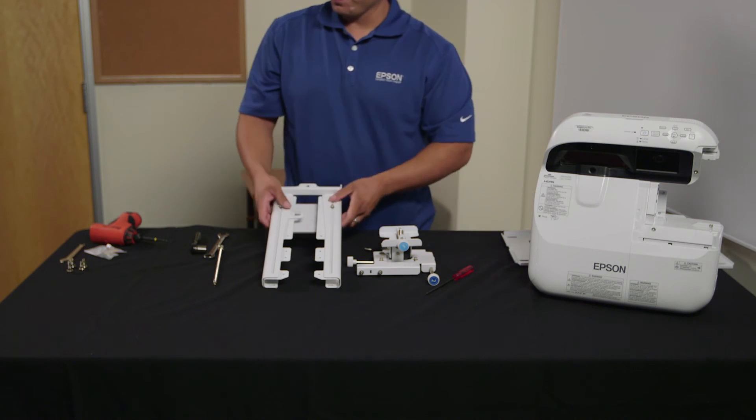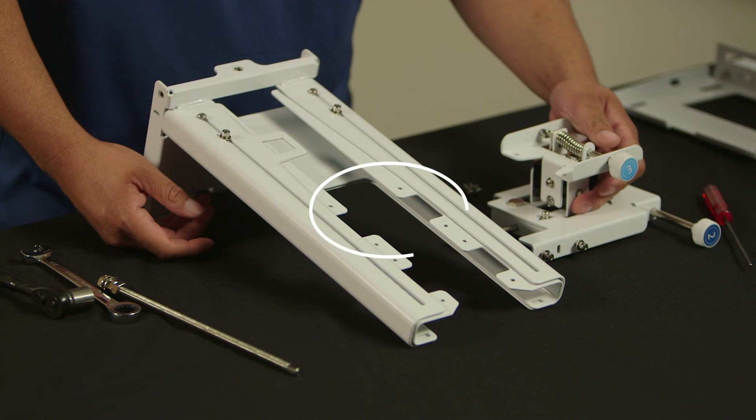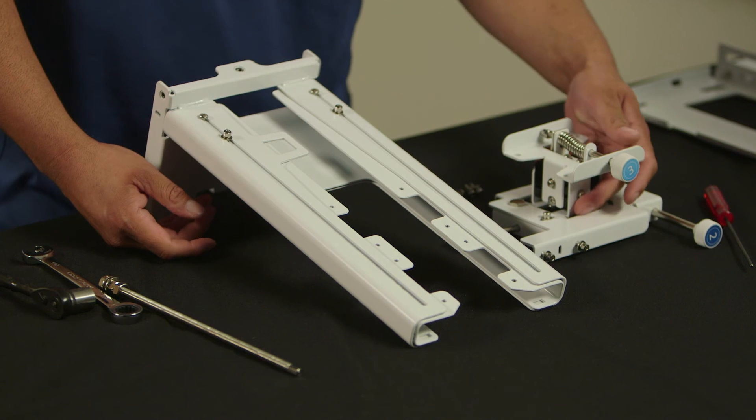For images less than 75 inches, attach the axis to the arm in position one. For images larger than 75 inches, attach the axis to position two. For the purposes of this video, we will use position two.